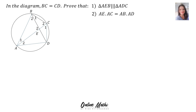Let's do another example. In the diagram, BC equals CD. Prove that, number 1: triangle AEB — the green triangle — is similar to triangle ADC — the blue triangle on the right-hand side. To prove two triangles similar, we need three angles equal. So in triangle AEB, the green one, and triangle ADC, the blue one, the following is happening.